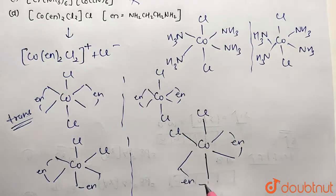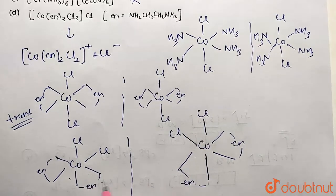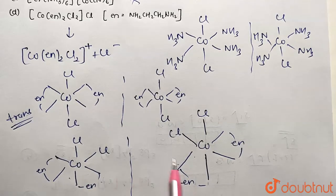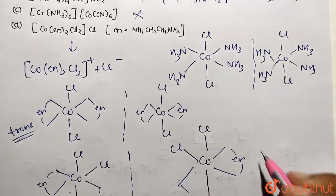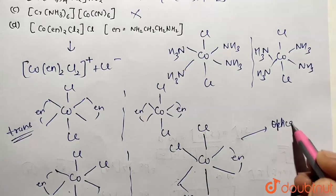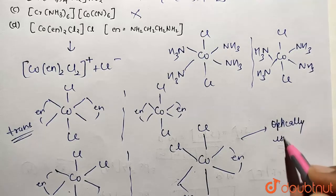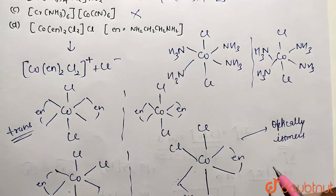So now if you try to superimpose these two images which are having same formula, they are going to be non-superimposable image. And that's why they are called as the optical isomers, or we can call them enantiomers. One is going to be of D form, another one is going to be of L form.